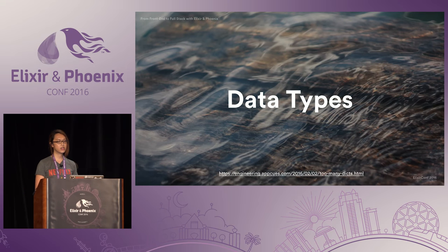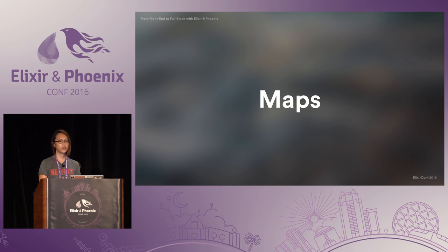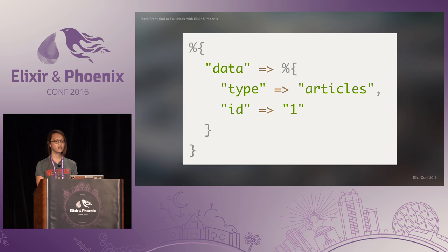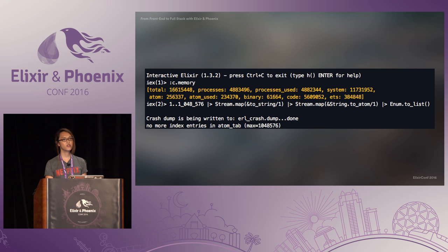In functional programming, we like to think about transforming data, and there are many kinds of data types in Elixir, unlike JavaScript which only has one standard dictionary implementation. When data comes from the outside and you want to represent it with a dictionary, you want to use a map. When you deal with data that comes from the outside, you always want to use a string-keyed map. This is because Erlang has a default max atom table size of about one million, and atoms aren't currently garbage collected. If you create them dynamically from user input, it could very well exceed that limit over time and crash Erlang. So be careful about external data.